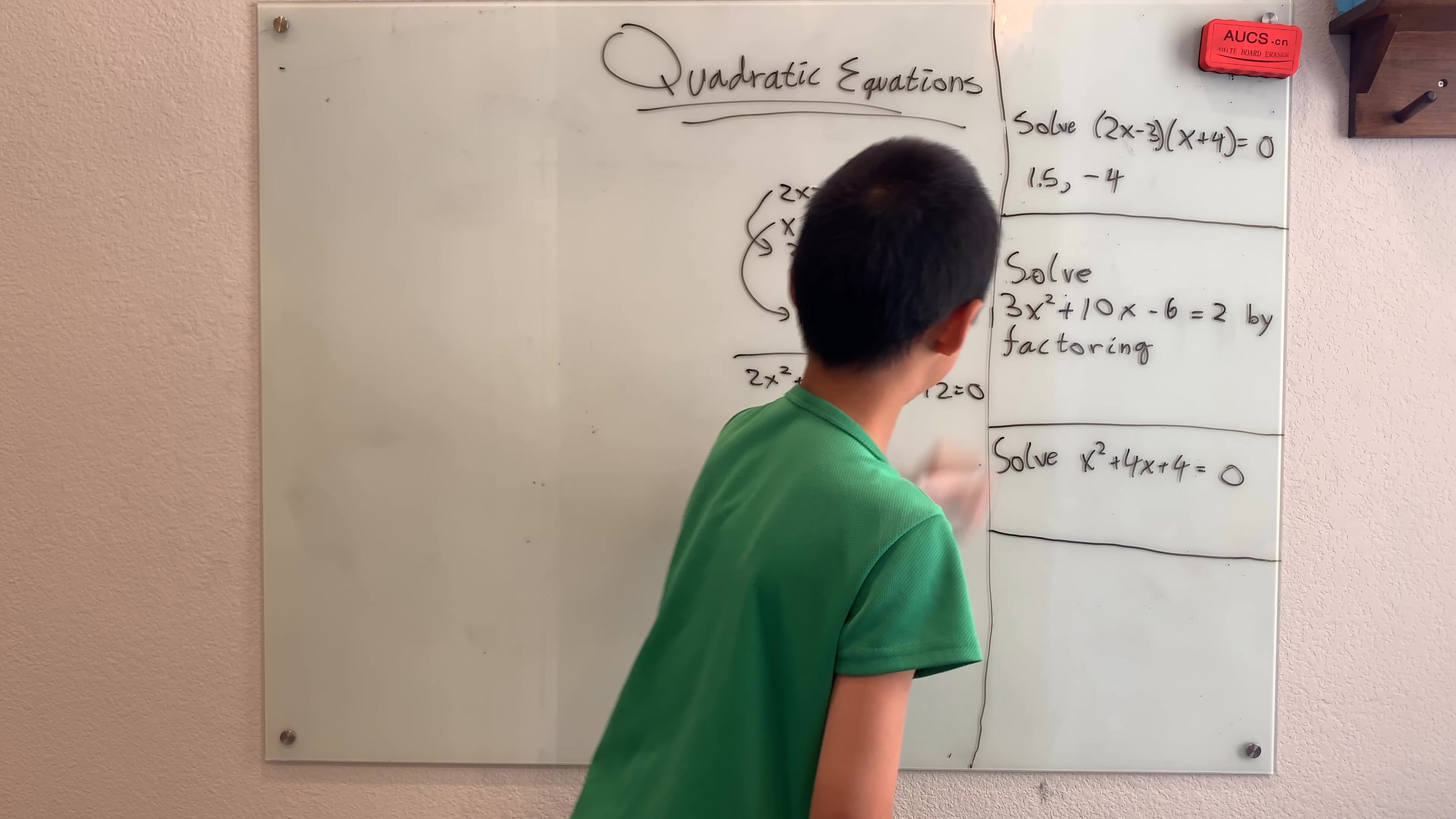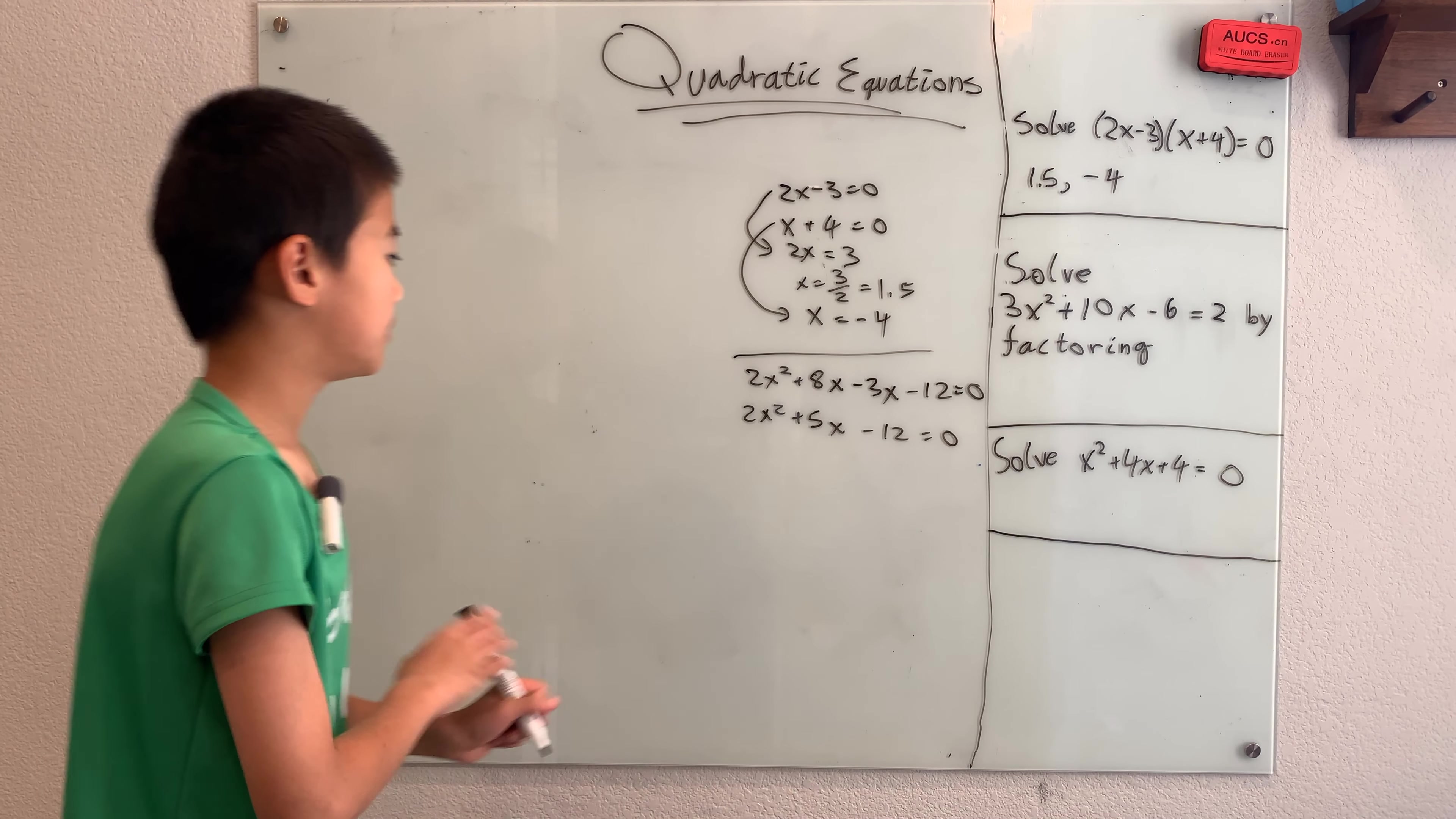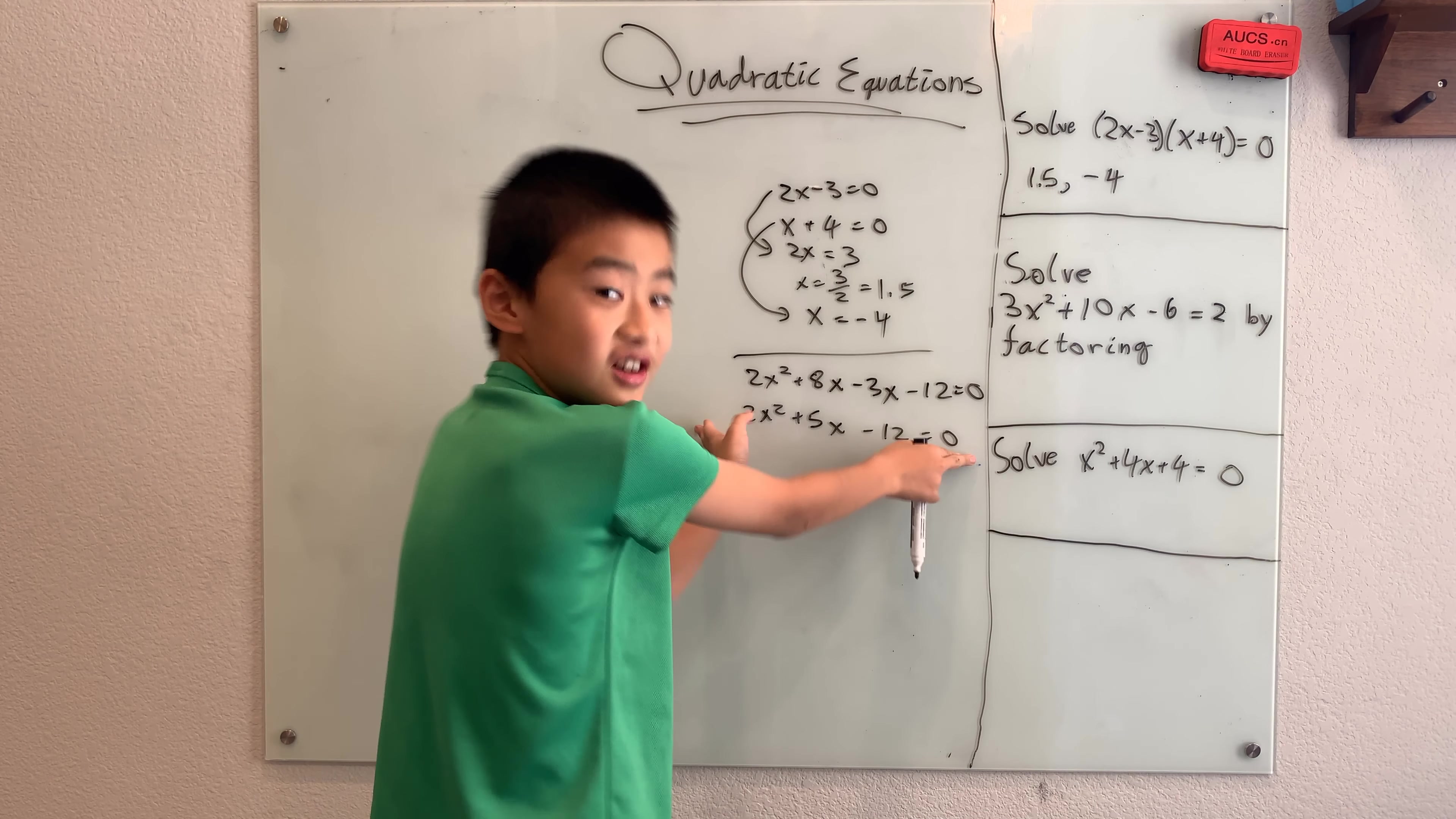And negative 3 times 4 is minus 12. This is equal to 0. And this is 2x squared plus 8x minus 3x. That's plus 5x minus 12 is equal to 0. So that means this easy, easy to solve equation here is the exact same thing as this not so easy to solve equation right here.